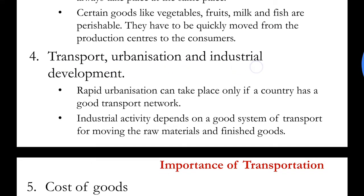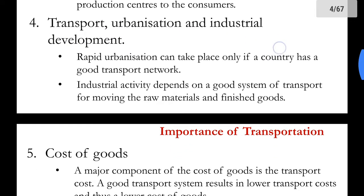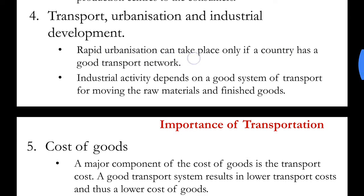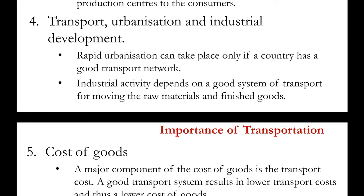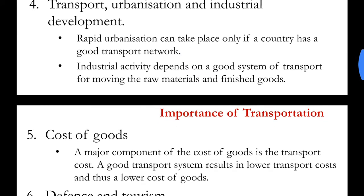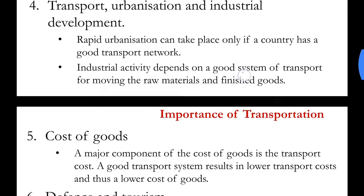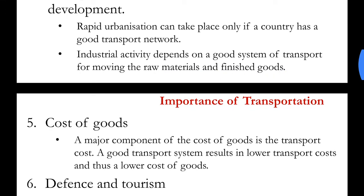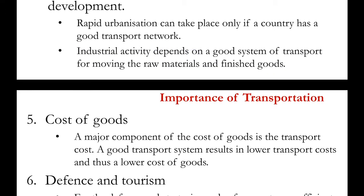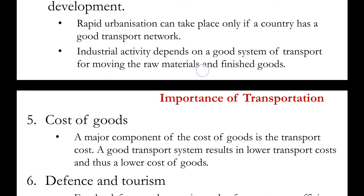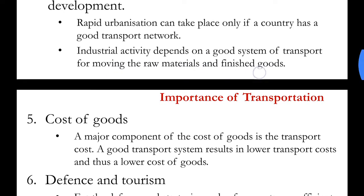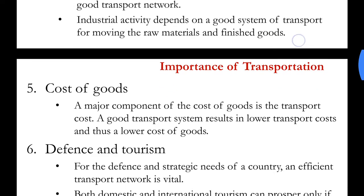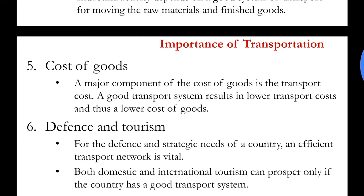Next: transport, urbanization and industrial development. Rapid urbanization can take place only if a country has a good transport network. Industrial activity depends on a good system of transport for moving raw materials into the industry and taking out finished goods and products from the industry to supply to the markets.